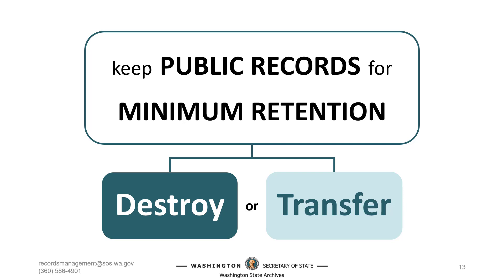Your responsibility is to keep your agency's records for the minimum amount of time listed in the retention schedule and then either destroy them or transfer them to the State Archives for preservation or appraisal. There are only two agencies authorized to be legal custodians of your records: your agency or the Washington State Archives. You can't transfer records to an individual, a library, a historical society, or anything like that, and you can't allow staff to keep records as personal possessions.